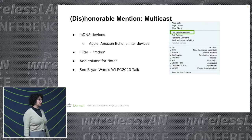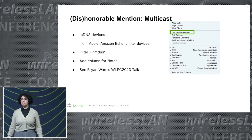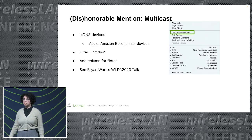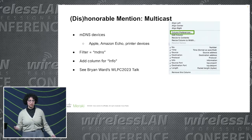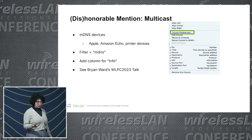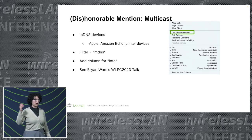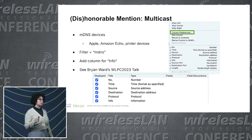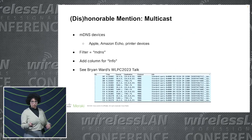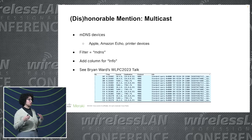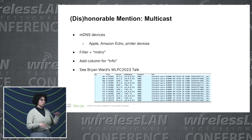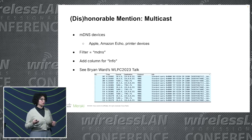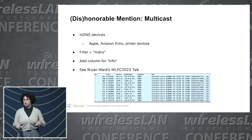My last mention is multicast, specifically mDNS. That comes up when people have AirPlay, Apple TVs, Alexa devices — all sorts of things use mDNS. If you filter for mDNS in Wireshark, I recommend adding the information field column via right-click column preferences, because it gives you a much clearer picture of which device is actually sending those mDNS queries. That's just scratching the surface on the potential damage mDNS can cause. I recommend Brian Ward's talk from WLPC a couple years ago — he goes into far more detail.